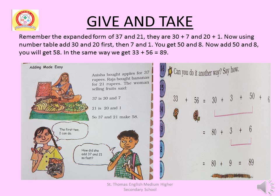Next: 33 plus 56. Break 33 into 30 plus 3 and 56 into 50 plus 6. Add the two-digit numbers: 30 plus 50 equals 80. Add the single-digit numbers: 3 plus 6 equals 9. So 80 plus 9 equals 89. The answer is 89.